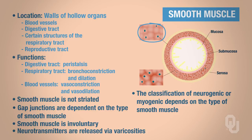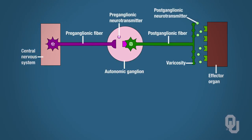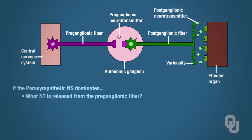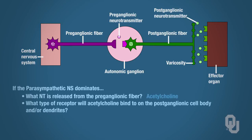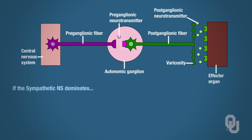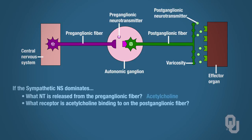Let's focus on the ANS for a moment. Does this diagram look familiar? If the parasympathetic nervous system is dominating, what neurotransmitter is released from the pre-ganglionic fiber? Acetylcholine. What type of receptor will acetylcholine bind to on the postganglionic cell body and/or dendrites? Nicotinic cholinergic. If the sympathetic nervous system dominates, what neurotransmitter is released from the pre-ganglionic fiber? It's still acetylcholine, and the receptor acetylcholine binds to on that postganglionic fiber is still nicotinic cholinergic.